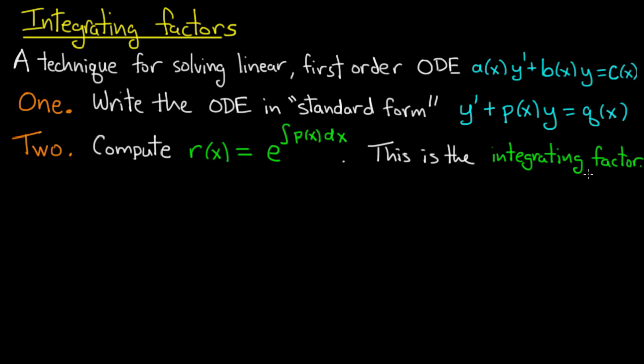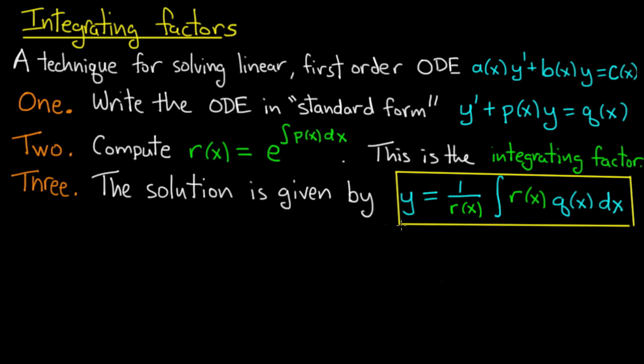Using this integrating factor, we can express the solution to the equation. The solution will be given by y equals one over the integrating factor times the integral of the product of the integrating factor and this function q(x). You can think of this like a formula for a solution, but I don't really like to just use formulas with no understanding where they come from.